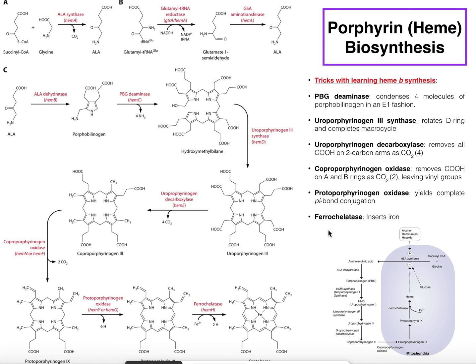Heme is the principal porphyrin, shown here as protoheme, which is another term for heme. As most of you probably know, it's an iron-containing coenzyme that's important in many enzymes in biology and also some proteins such as myoglobin and hemoglobin. We also know that heme is found in cytochrome P450 enzymes and in some enzymes of the electron transport chain, and many more.